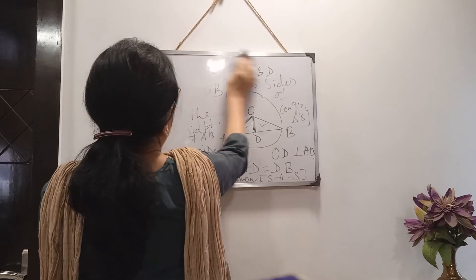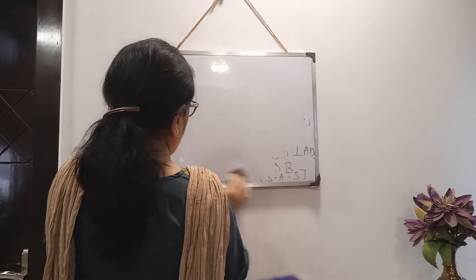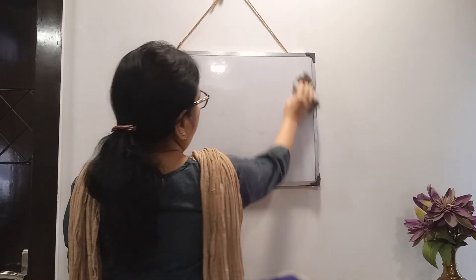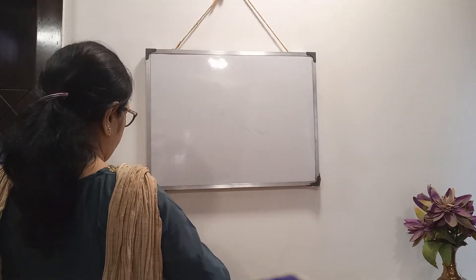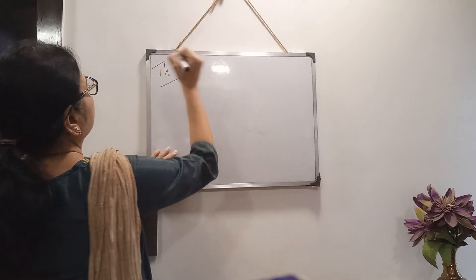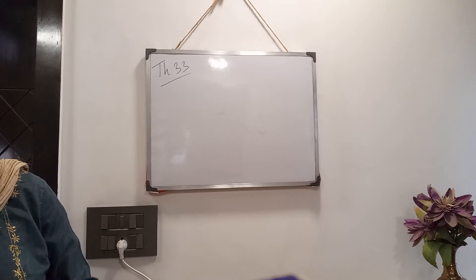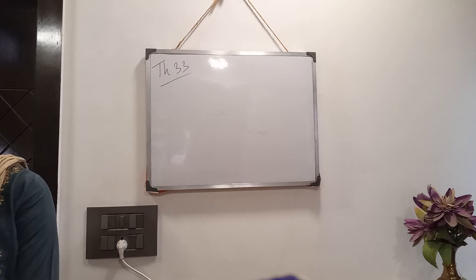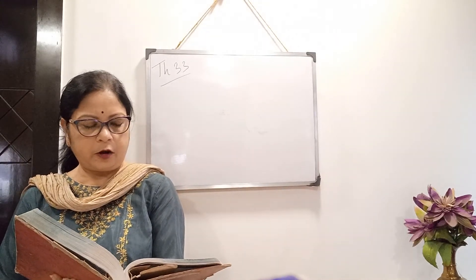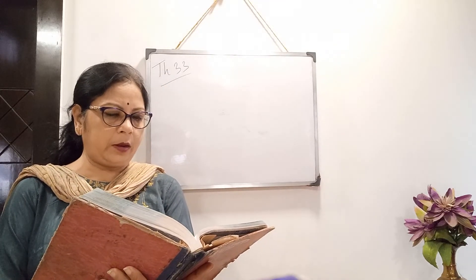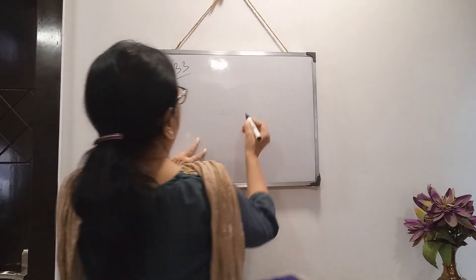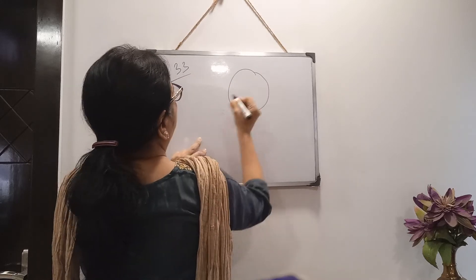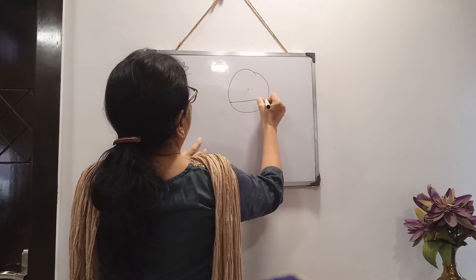Now the converse of theorem 32 — that is theorem number 33. In theorem 33, it is stated that if any straight line passing through the center of a circle bisects any chord which is not a diameter, then the straight line will be perpendicular on the chord. This is just the reverse of the previous theorem.